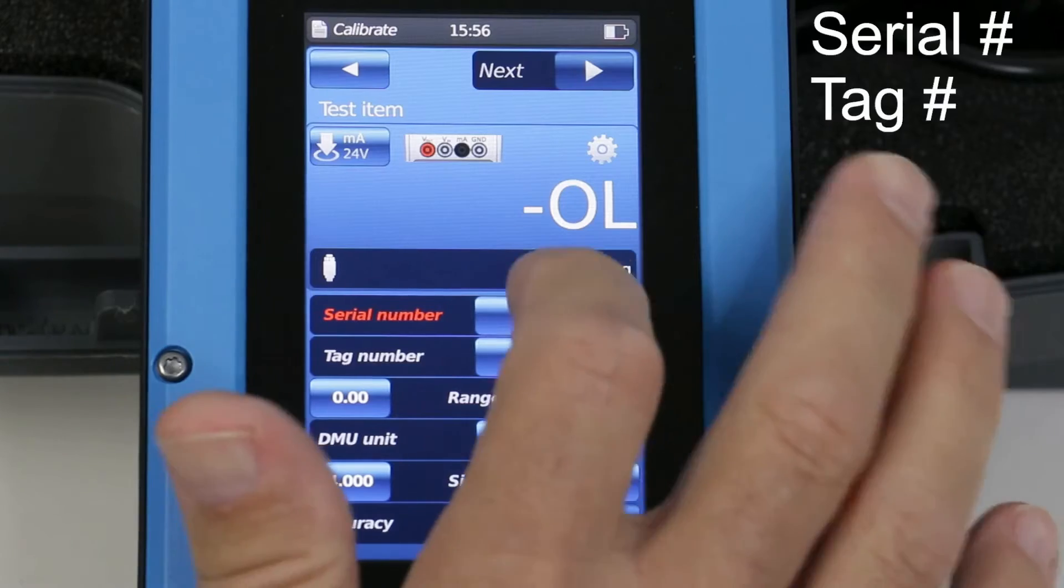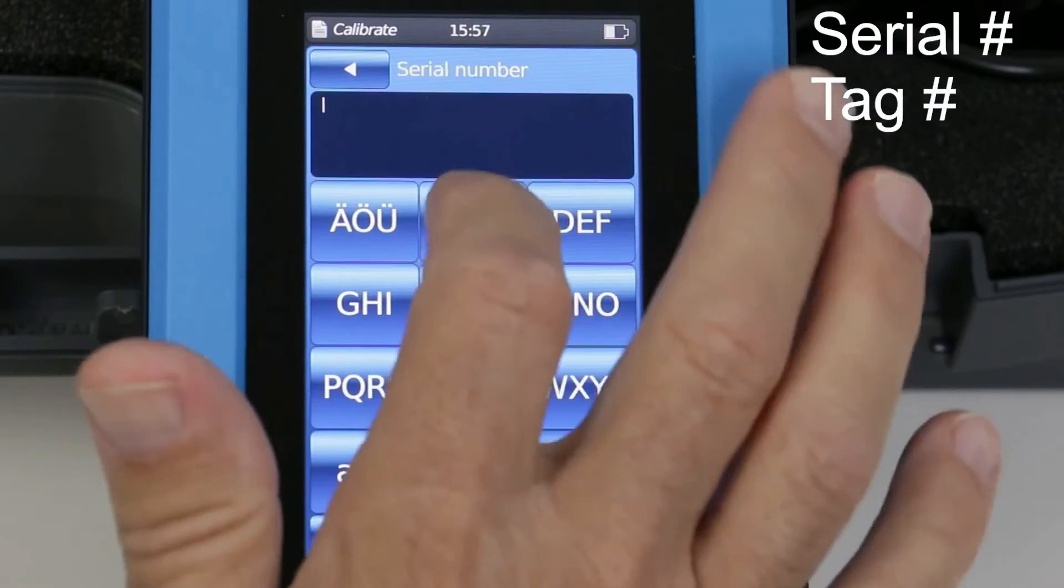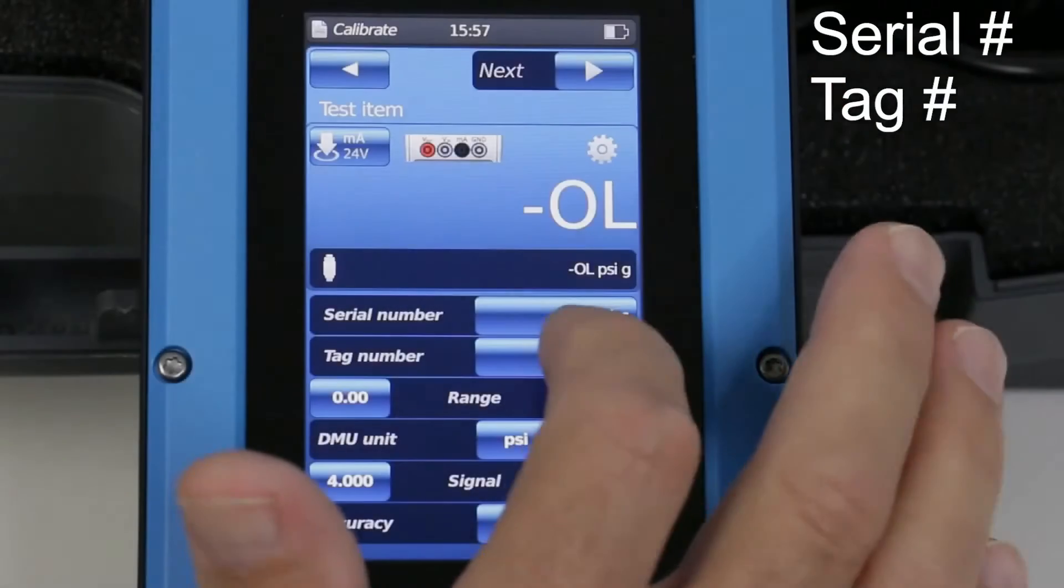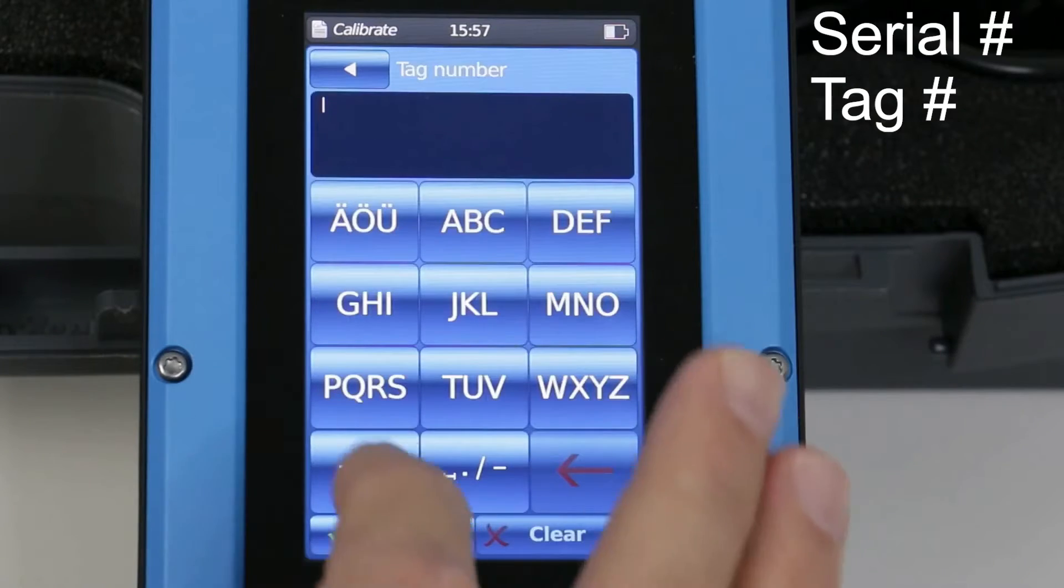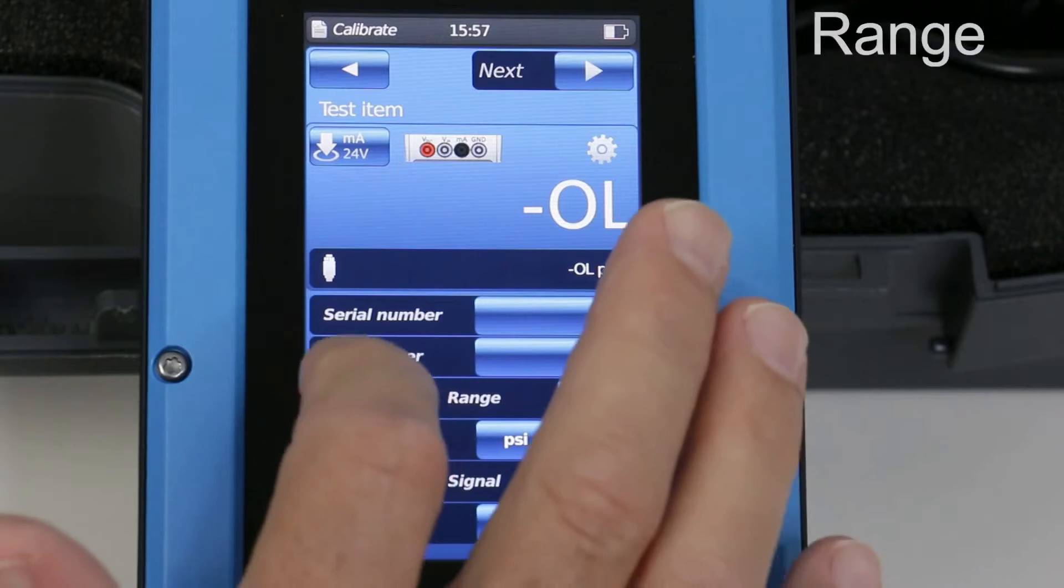Add the serial and tag number, the pressure range, units and type.